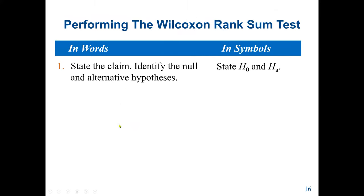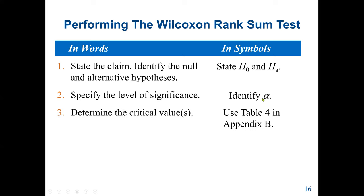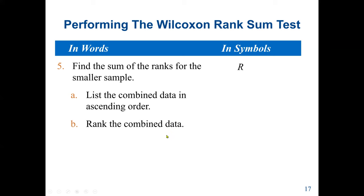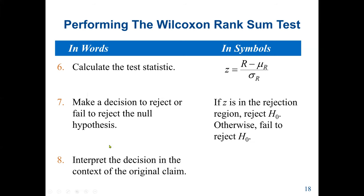The steps for the Wilcoxon rank-sum test: first, state HO and HA; second, identify alpha; third, determine the critical value using the standard normal Z table; fourth, determine the sample sizes; fifth, find the sum of ranks for the smaller sample; sixth, calculate the test statistic Z; seventh, make a decision to accept or reject HO.